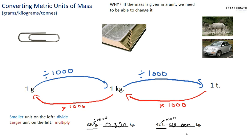Just quickly before I finish — a student asked me, what's the difference between mass and weight? Mass is the quantity of material in an object, while weight is how much gravity pulls down on an object. So if the mass is one ton on Earth, the mass would still be one ton on the Moon. But if something weighs 60 pounds on Earth, its weight would be different on the Moon because gravity is different there — it would actually be lighter.